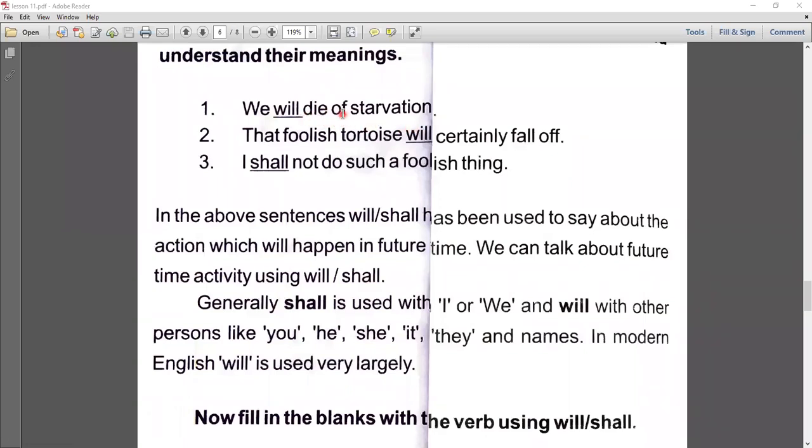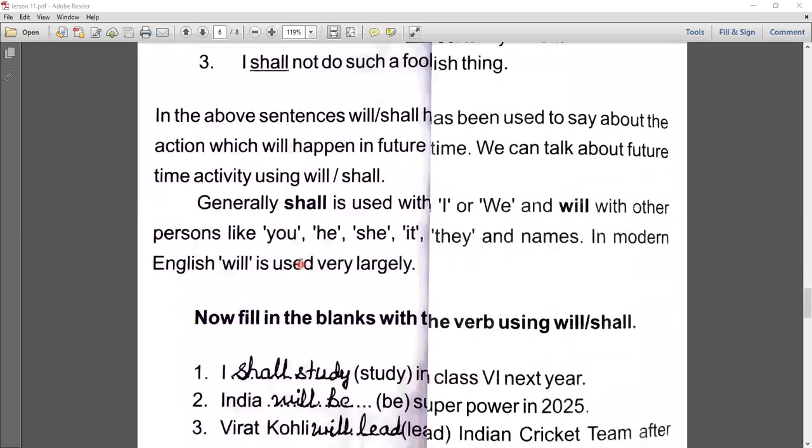If you notice modern English, finally we will use will. We will die of starvation. We will use the verb in its first form. But in modern English, the shall is omitted and we use will. Clear, students?